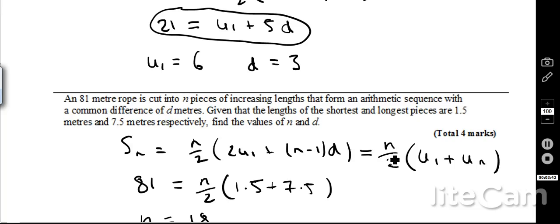However, this second version here is going to be useful because I've got the first term, and I've also got the last term, therefore I can then find out the missing value of n. So in this case here, 81 is the sum. If I add all those bits of ropes together, it's going to have to equal the 81 metres it started out with, and that's equal to n over 2.